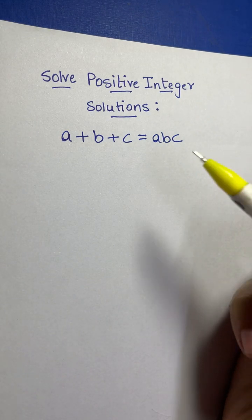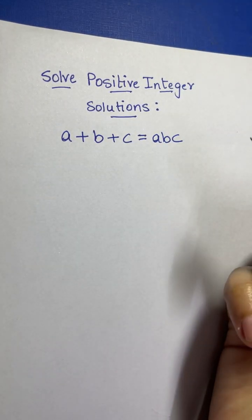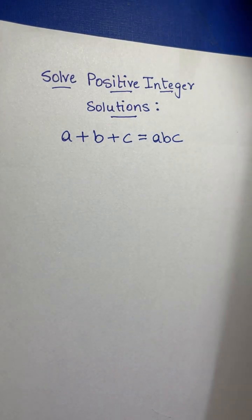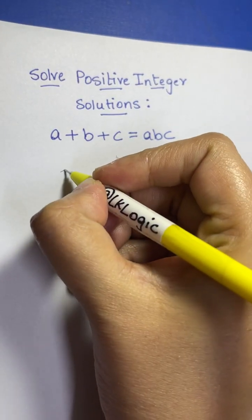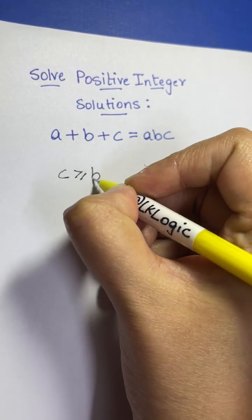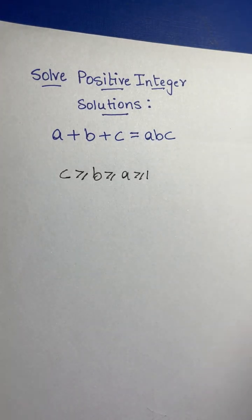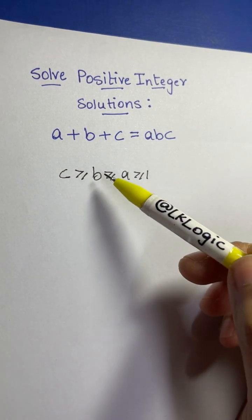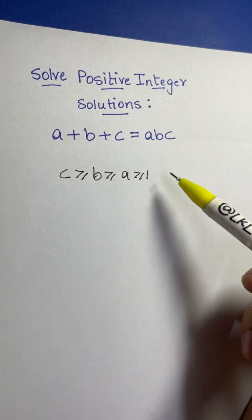Because of this cyclic symmetry, we are going to sort and assume they are ordered. We let c be greater than or equal to b, which is greater than or equal to a, which is greater than or equal to 1. So: c ≥ b ≥ a ≥ 1, and they are all positive integers.